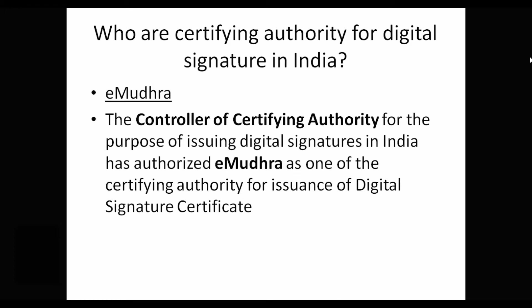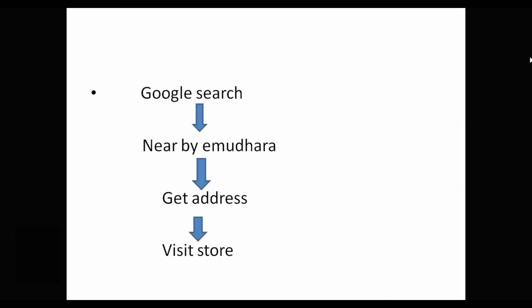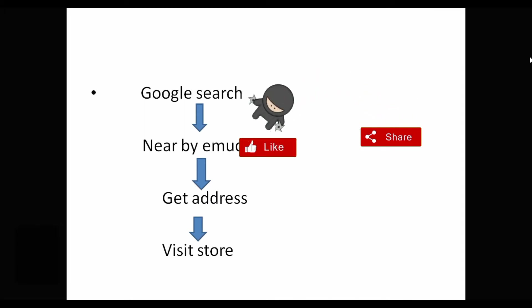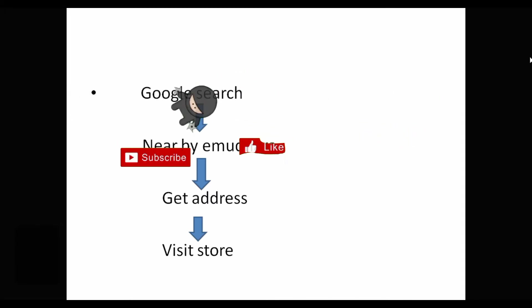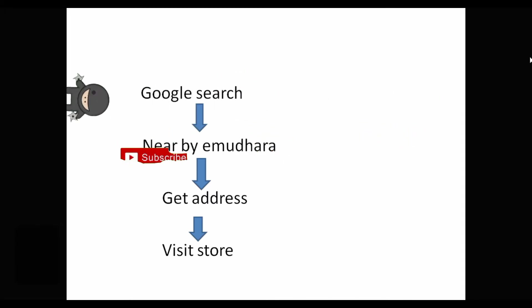The good thing is that you can search for a certified person. If you click it, you write a type of address. Your map is available and you can visit your application form.